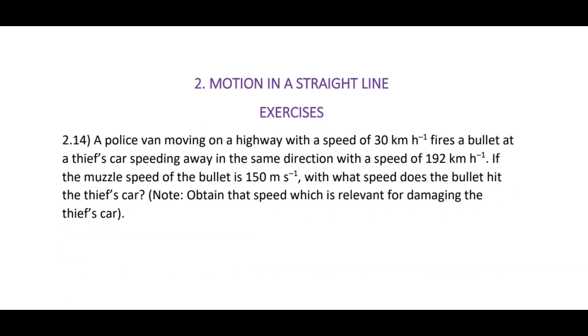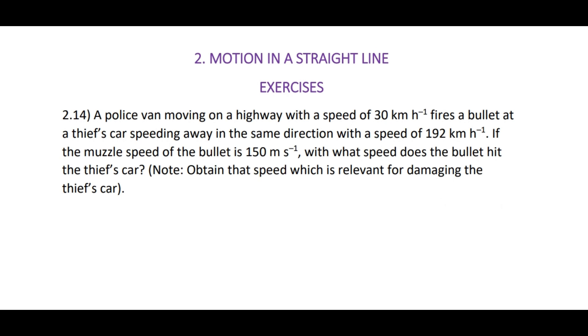Coming to one more sub-question: Motion in a straight line, exercise 2.14. A police van moving on a highway with a speed of 30 kilometers per hour fires a bullet at a thief's car speeding away in the same direction with a speed of 192 kilometers per hour. If the muzzle speed of the bullet is 150 meters per second, with what speed does the bullet hit the thief's car?